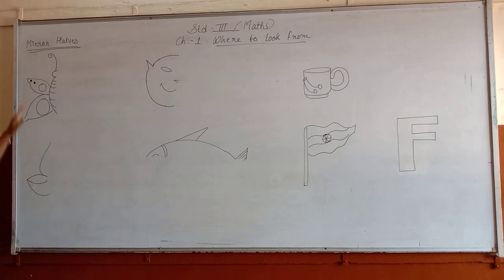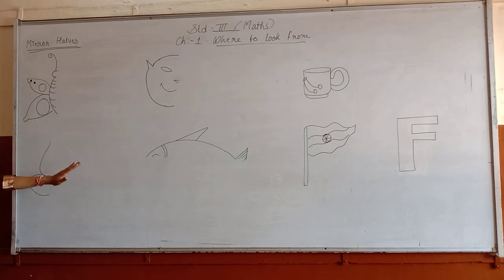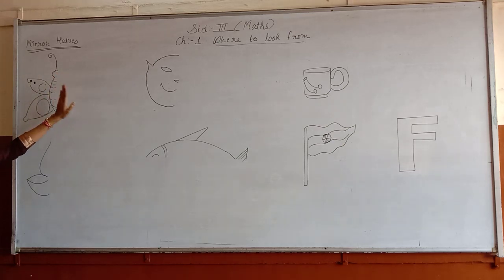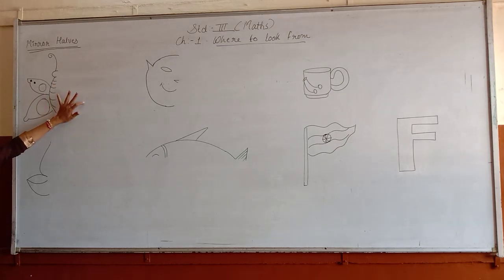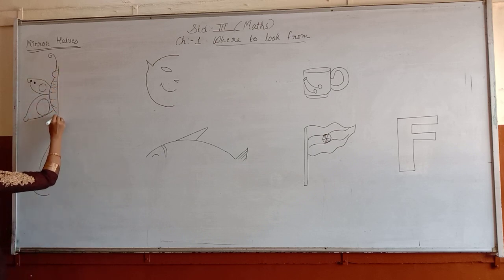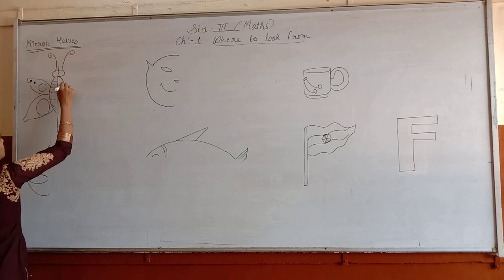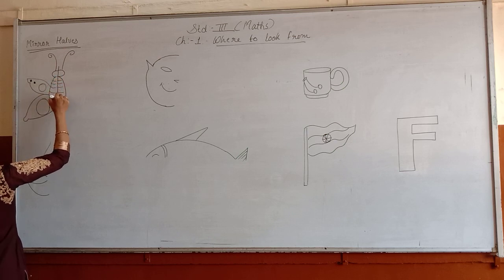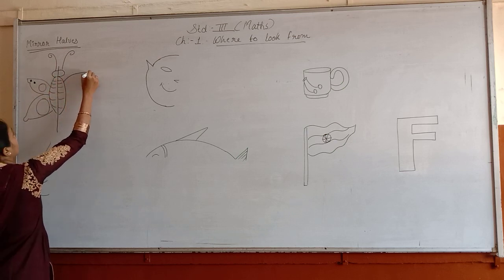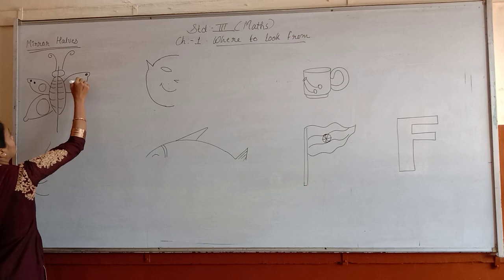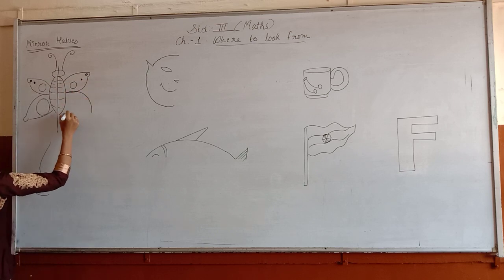Now the new topic is mirror halves. You can see here I have drawn a few pictures but they are half. If you will put the mirror here in the center, you will get the same picture on the other side. So you have to put the mirror and you will get the same picture like this. This is a butterfly — like this you have to draw. This is called mirror halves.